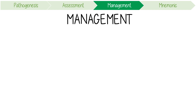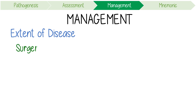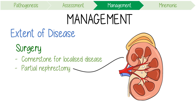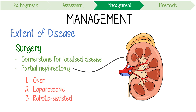The management of renal cell carcinoma is again dependent on the extent of disease. In general, surgery is the cornerstone for localised disease and may achieve cure. When possible, partial nephrectomy is preferred as it can facilitate preservation of as much renal function as possible. Three options for surgical techniques include open, laparoscopic, or robotic assisted laparoscopic nephrectomy.